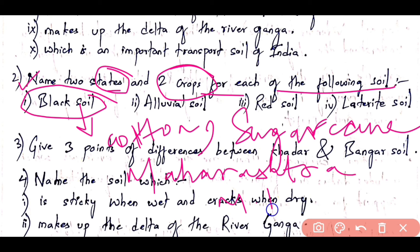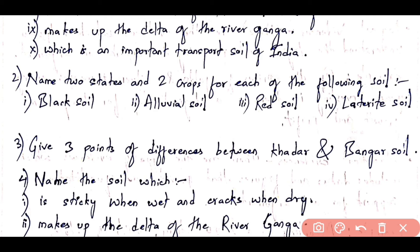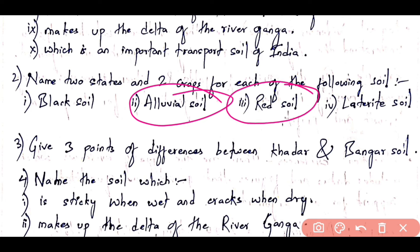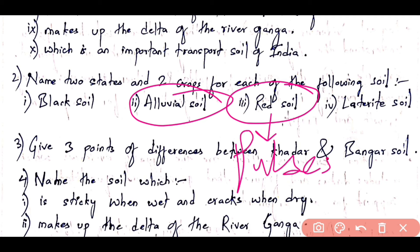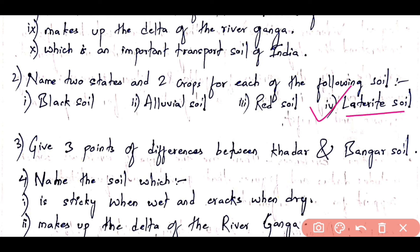For alluvial soil, you can write wheat and rice as two crops, and Uttar Pradesh and West Bengal as two states — you can also write Haryana. For red soil, the two states are Karnataka and Tamil Nadu (you can also write Odisha), and two crops are pulses and rice.